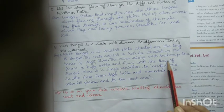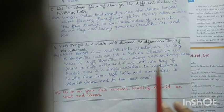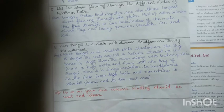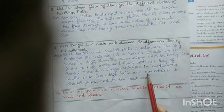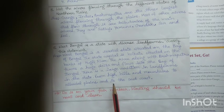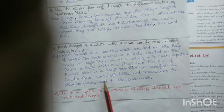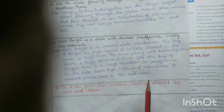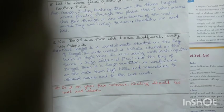West Bengal flows through the Bay of Bengal. There is a vast variation of landforms in the state, from high hills and mountains to level plains and the seacoast. Hope you guys understand all the chapters and all the questions answered. Thank you. Have a good time.